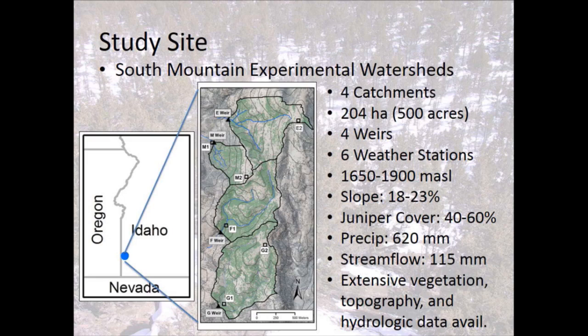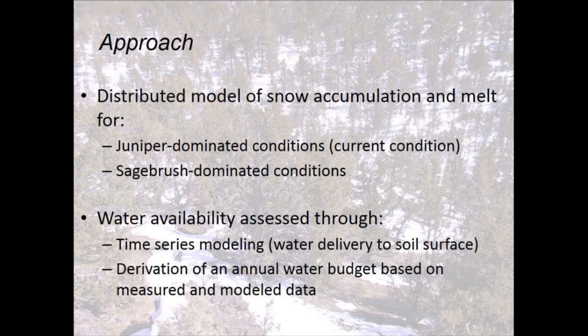We have extensive field-collected data as well as LiDAR data sets for topography and vegetation. Our approach to characterize how snow is distributed and how it affects water is to develop a distributed model of snow accumulation and melt for both juniper-dominated and sagebrush-dominated conditions. Water availability is assessed through time series modeling — using that distributed data to predict water delivery to the soil surface. The model predicts water available for infiltration, stream flow, and evapotranspiration, and we use that time series to derive an annual water budget.